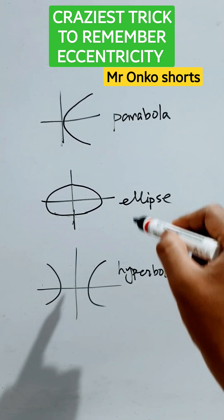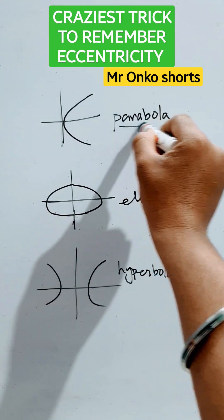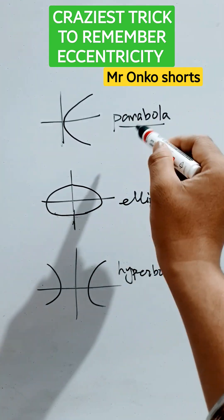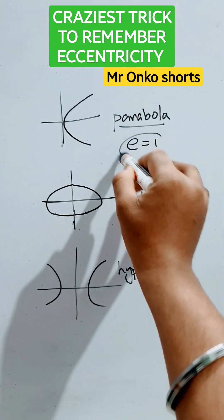Let's see the trick, the craziest trick. Here there is no 'e', so at least one 'e' is required. The eccentricity will be one.